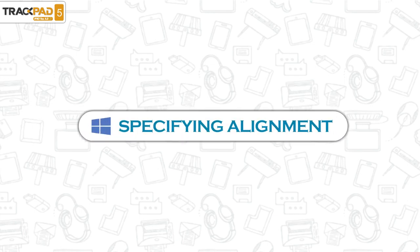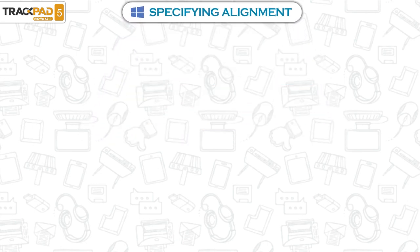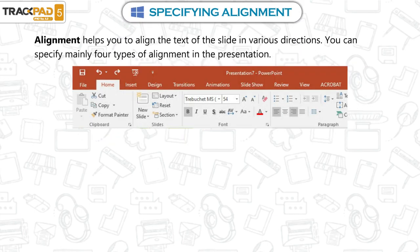Specifying Alignment. Alignment helps you to align the text of the slide in various directions. You can specify mainly four types of alignment in the presentation.